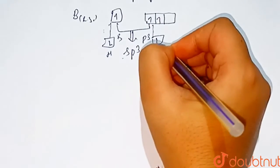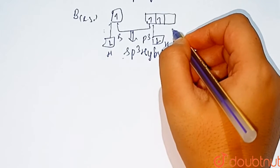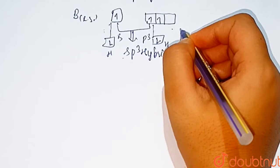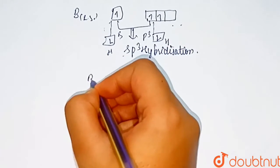The third half-filled hybrid orbital of one boron atom and the vacant hybrid orbital of the second boron atom overlap simultaneously with a half-filled orbital of a hydrogen atom. I will show you with the help of this structure.